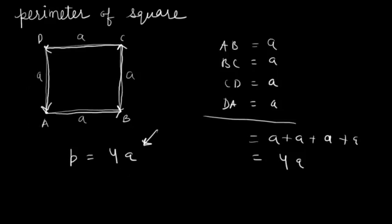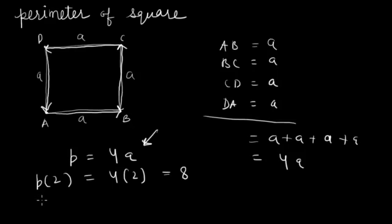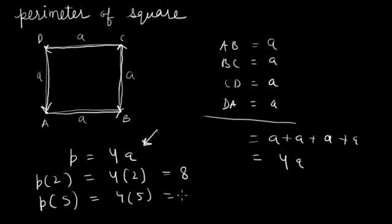For example, if we have one square in which the side 'a' is 2, then the perimeter is 4 × 2 = 8. We can find the perimeter for any square using this formula. If the side is of length 5, then the perimeter is 4 × 5 = 20. This is how we can find out the perimeter of any square.